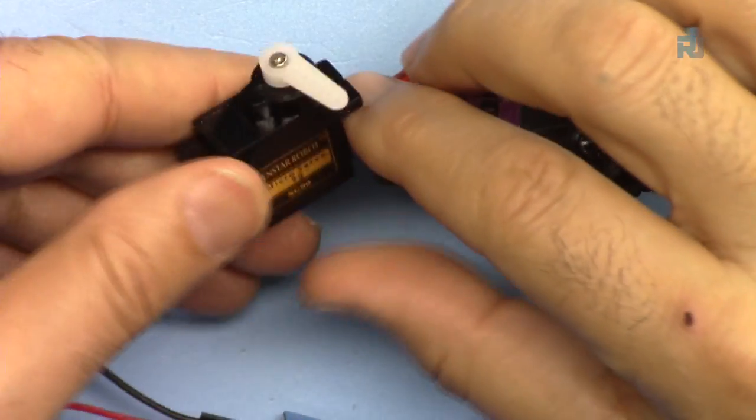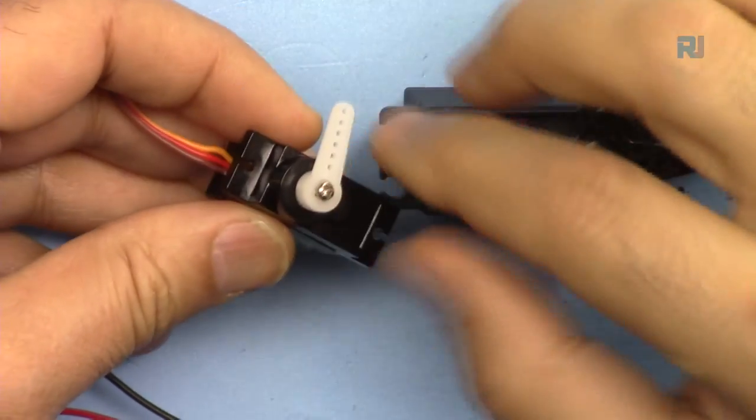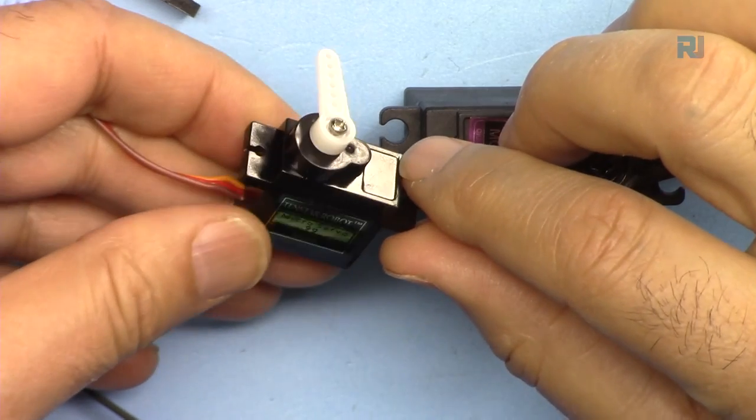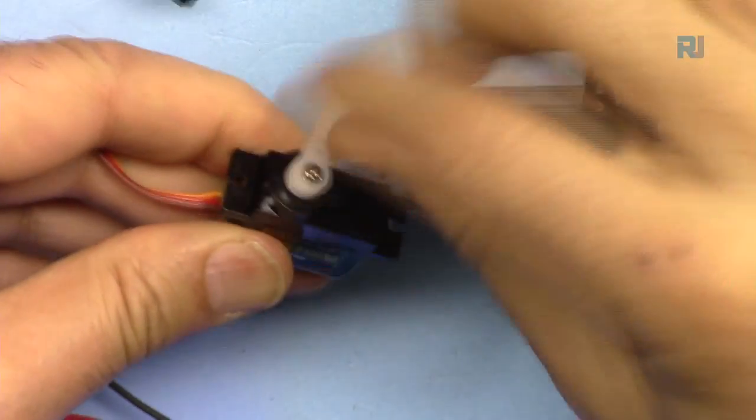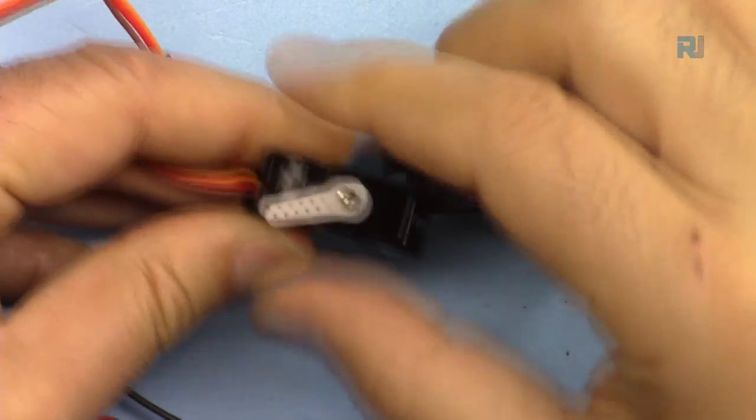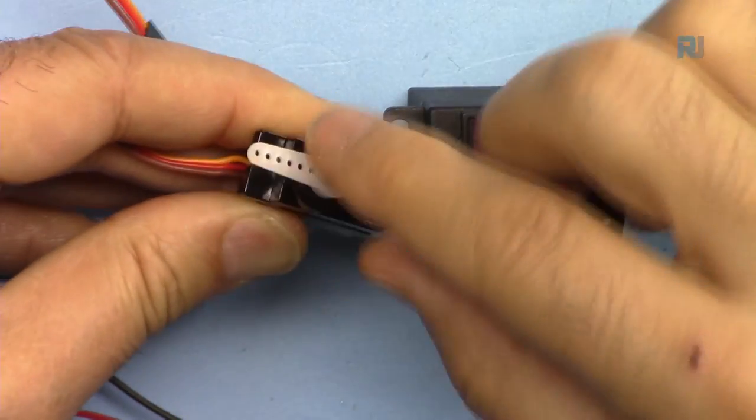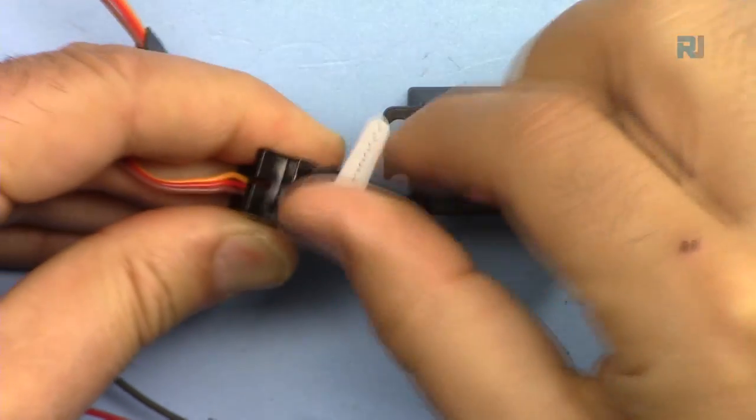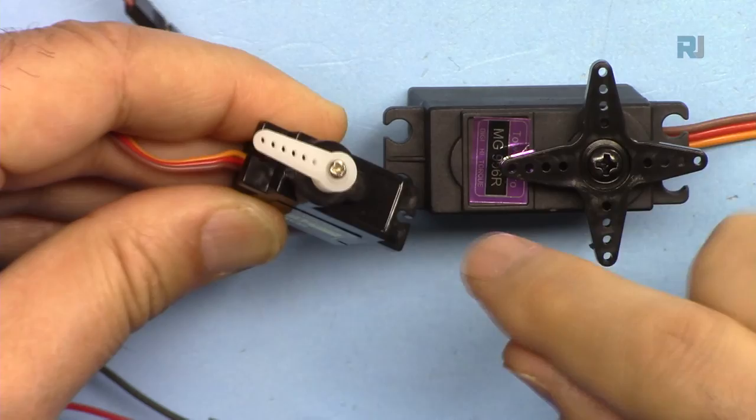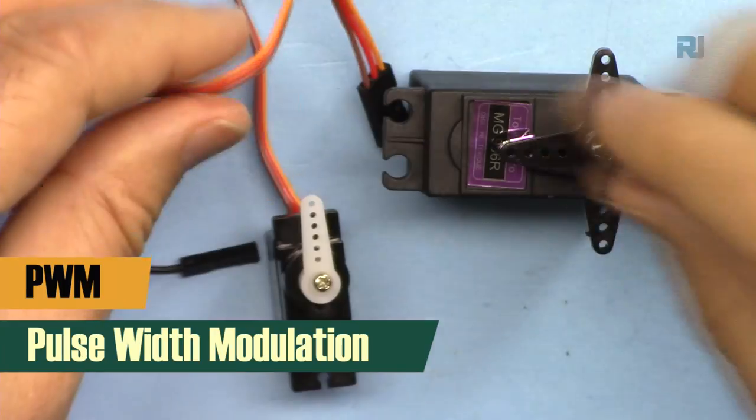A servo motor is a type of motor that rotates only 180 degrees. For example, if we assume this as zero, then we have 180 degrees on this side. If this is zero, then we will have 180 degrees on the other side.